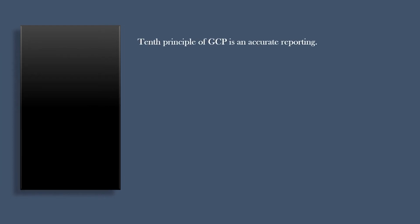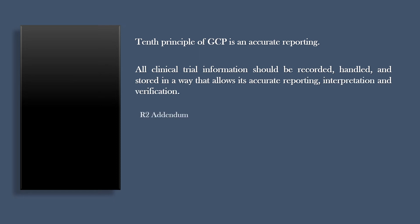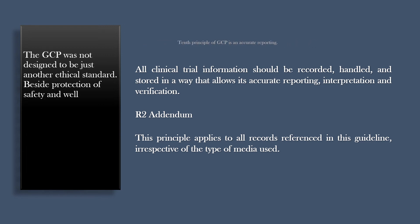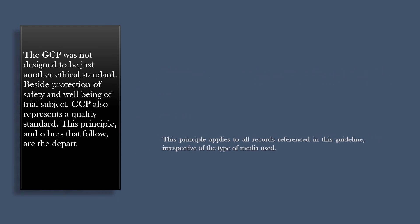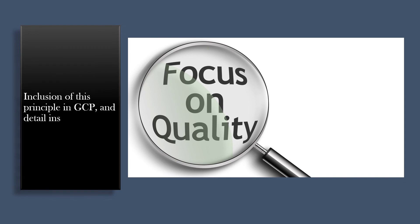The tenth principle of GCP is accurate reporting. All clinical trial information should be recorded, handled, and stored in a way that allows its accurate reporting, interpretation and verification. This principle applies to all records referenced in this guideline, irrespective of the type of media used. The GCP was not designed to be just another ethical standard — beside protection of safety and well-being of trial subjects, GCP also represents a quality standard. This principle marks the introduction of quality principles, and states the importance of data quality as an integral part of the clinical trial process.